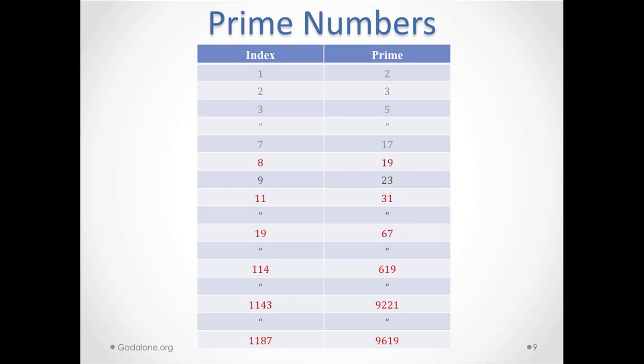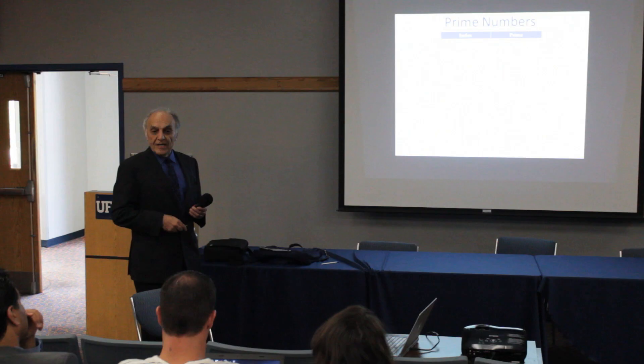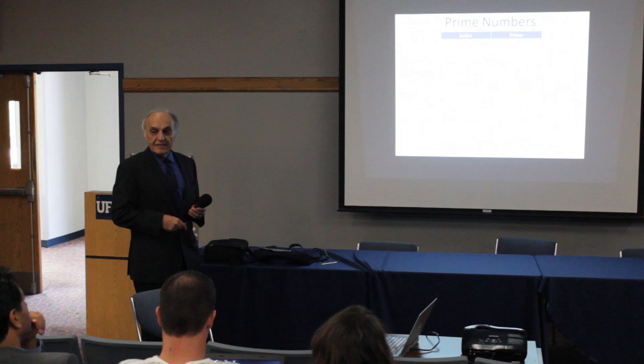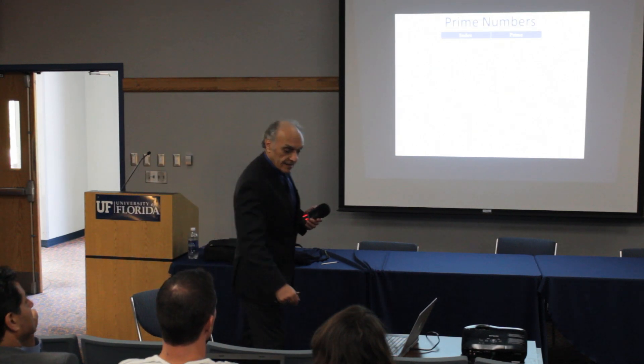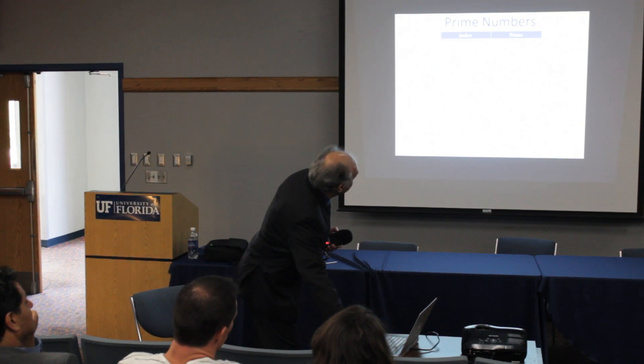Now we'll go to these primes. I have index 1 is prime 2, index 2 is prime 3, index 8 is prime 19, index 9 is prime 23, index 19 is prime 67. When we get to 1143, you see it's 9221. We have to write a program to do this, without that we can't do it. And 1187 is 9619.